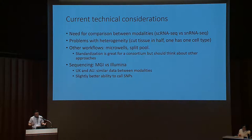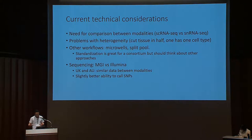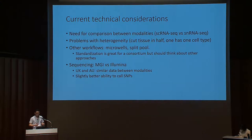Finally, we talked about sequencing considerations of MGI versus Illumina. Both the UK and Australia groups presented anecdotes that results are actually quite similar between the modalities. In the case of calling genetic variants from single cell RNA sequencing data, the longer reads afforded by MGI appear to give more power to call SNPs.